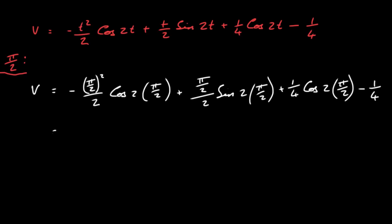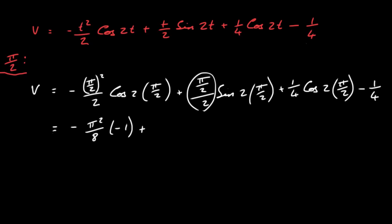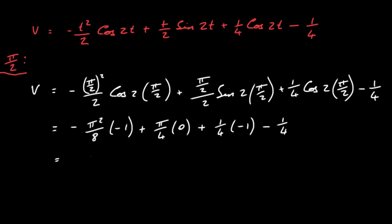Simplifying: -(π/2)² over 2 gives -π²/8. cos(π) = -1, so that term becomes +π²/8. Then (π/2)/2 = π/4, and sin(π) = 0, so that term is zero. Then ¼ · cos(π) = ¼ · (-1) = -¼, and we have a further -¼, giving -¼ - ¼ = -½.